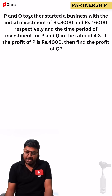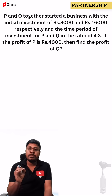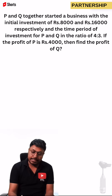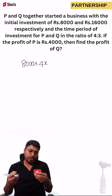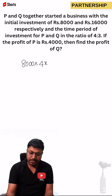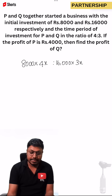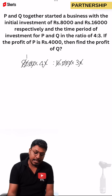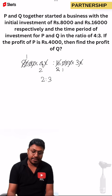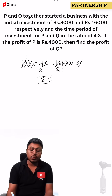The profit of P has been given and our target is to find the profit of Q. There are 2 partners — the first person's investment is 8,000 with a time ratio of 4, and the second person's investment is 16,000 with a time ratio of 3. We cancel the zeros and the x values: 1×8=8, 8×2=16, 1×2=2, 2×2=4. So finally their investment ratio is 2:3.